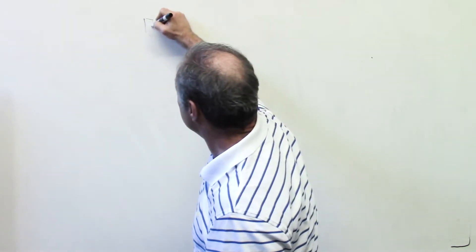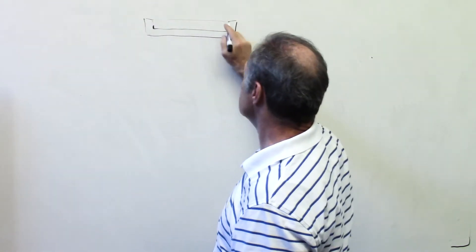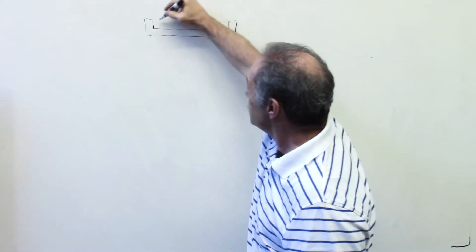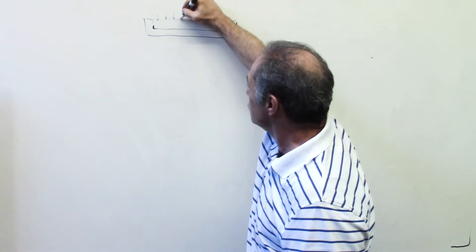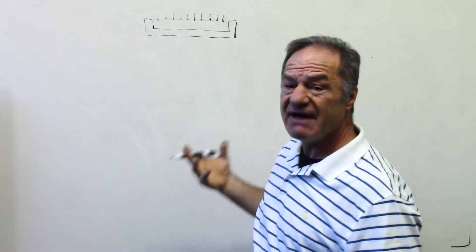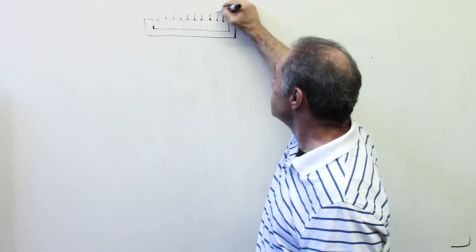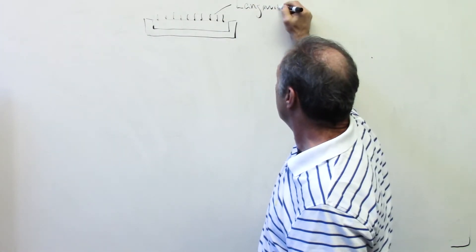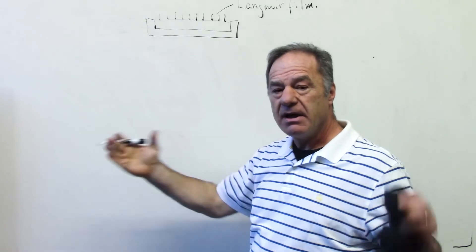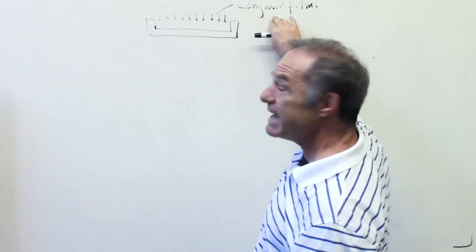I drew this trough earlier. Simply, it's usually a Teflon vessel, because you need to keep everything clean in the surface layer — it's easy to clean very robustly, Teflon. You spread on top of the water this layer of insoluble surfactants. It could be a phospholipid, fatty acid, or cholesterol. This insoluble layer is a Langmuir film.